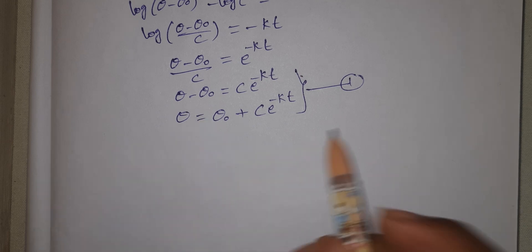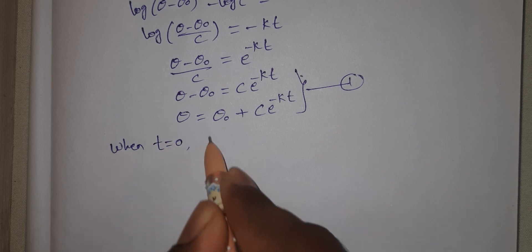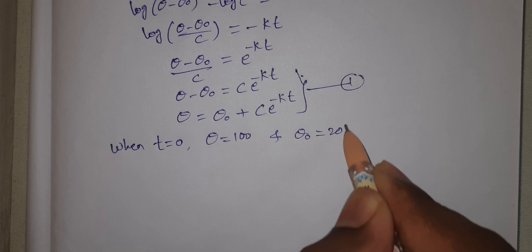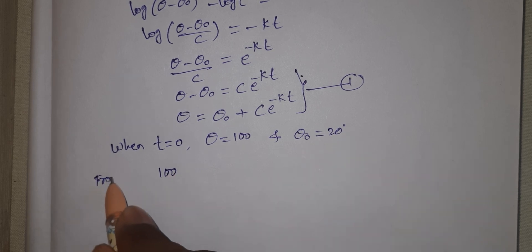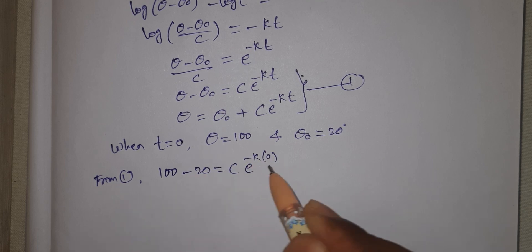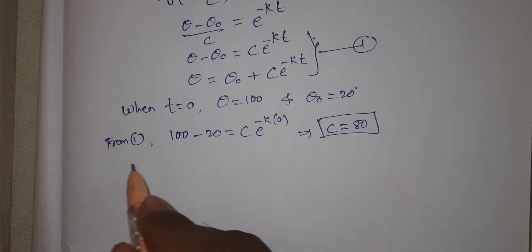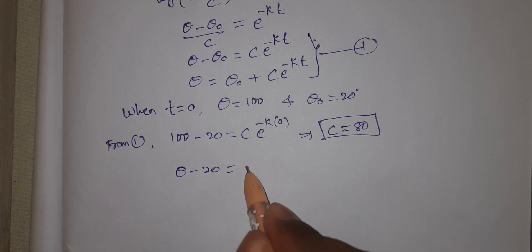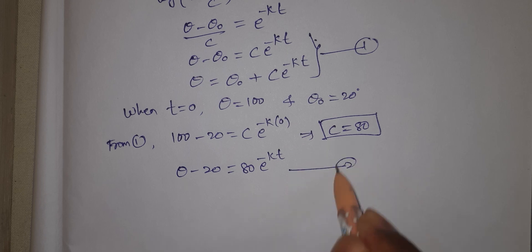Now we find constant c. When t equal to 0, θ equal to 100 and θ₀ equal to 20 degrees. From equation 1: 100 minus 20 equals c into e^(minus k into 0). That implies c equals 80. So from equation 1: θ minus 20 equals 80·e^(minus k·t). This is equation number 2.